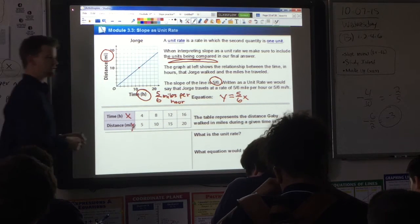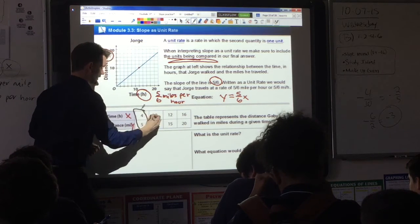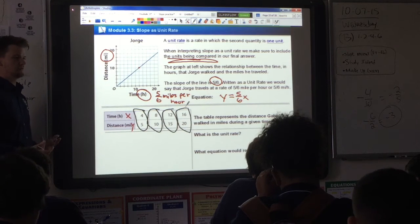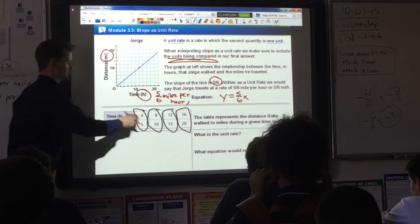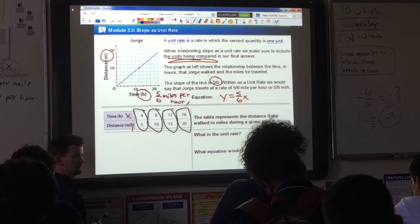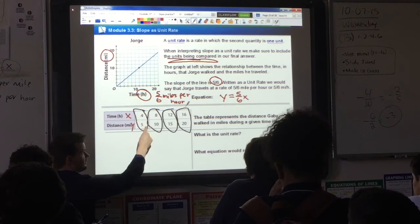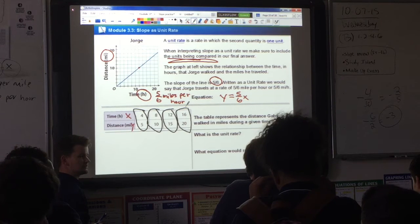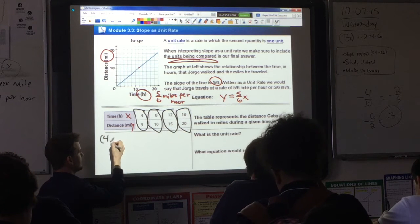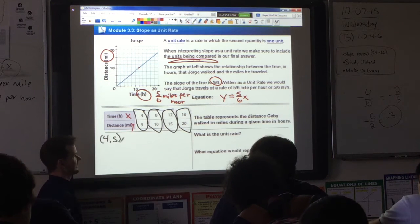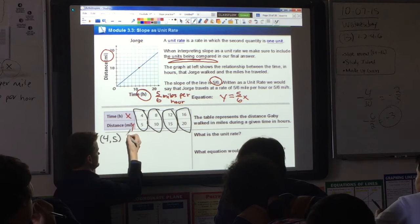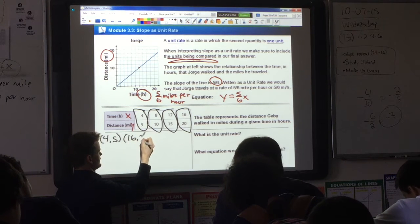You can now take any two sets of x, y coordinates from this table and use them to find the slope, whichever two you want. What two sets of coordinates do you want to use? 4 and 5. Is 4 the x value or the y value? The x. So we're going to write it as 4, 5. That's my first set. And then what other set do you want to use? It doesn't matter. You'll get the same answer no matter which two sets you use. 16, 20. Let's go through the process.